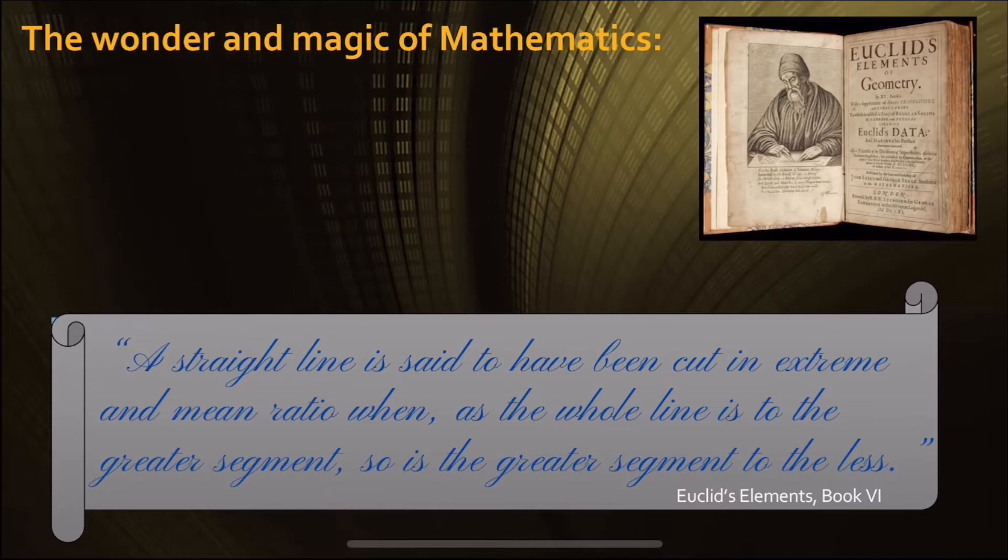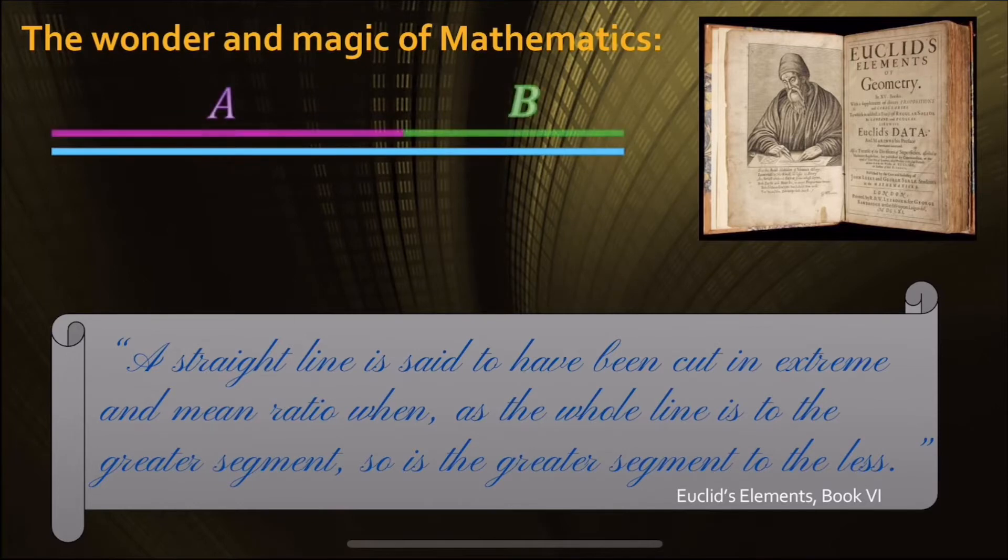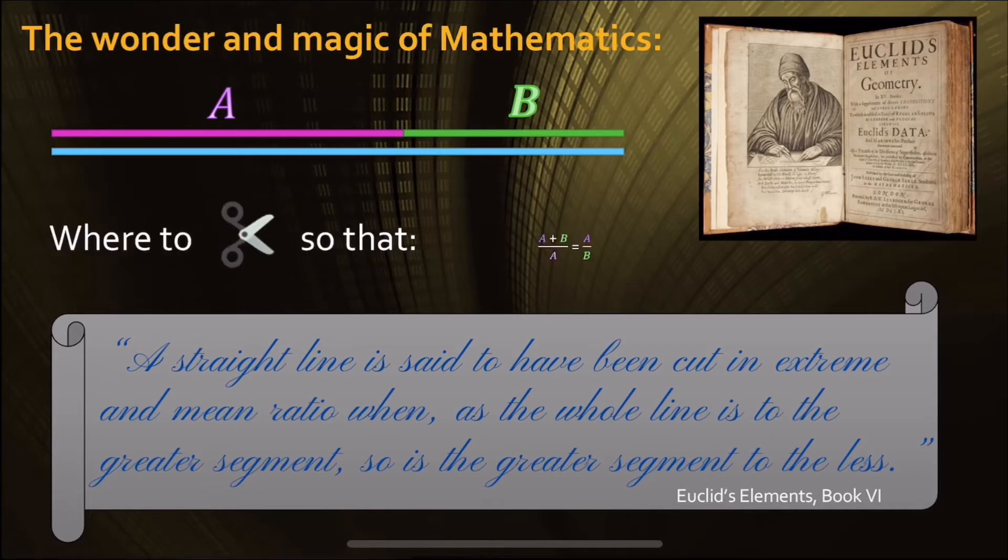Let's say we have a string, and we cut the string into two pieces. The long side is A, short side is B. The question that Euclid was asking is, where do we cut it so that the ratio of A plus B to A is equal to the ratio of A to B?